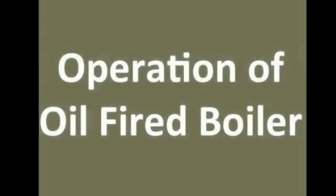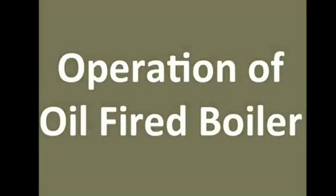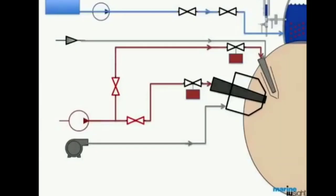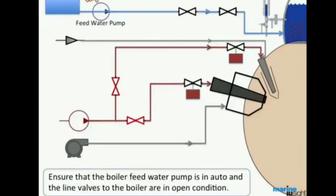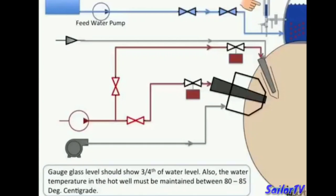We will now move to the operation of an auxiliary oil-fired boiler. Before firing a boiler, ensure that the boiler feed water pump is in auto and the feed water line valves to the boiler are in open condition. Check the water level in the boiler drum through the gauge glass — the gauge glass level should show three-fourths of the water level.